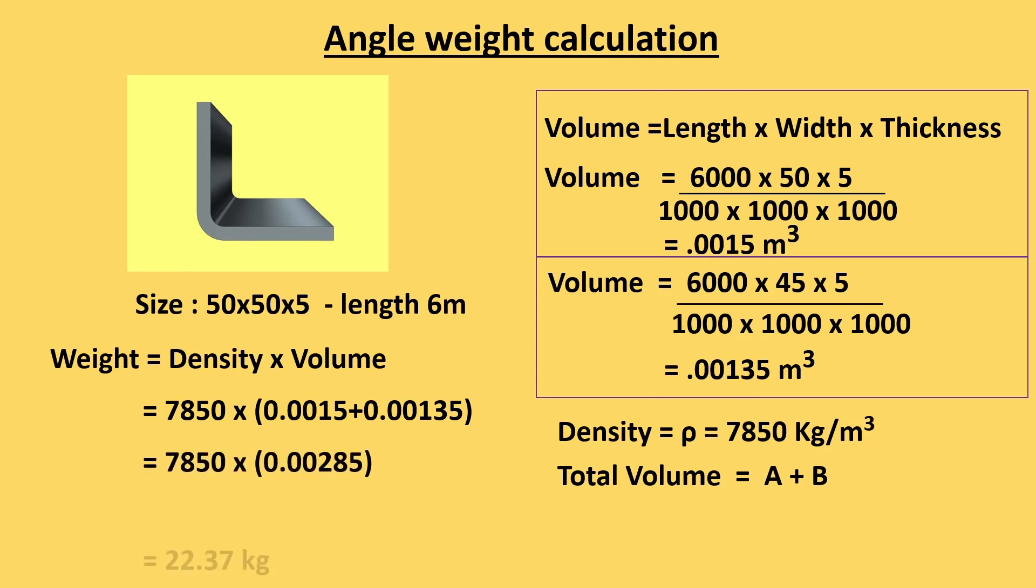Then we will get the weight of angle plate which is having length 6 meter. So the weight of 6 meter angle is 22.37 kg.